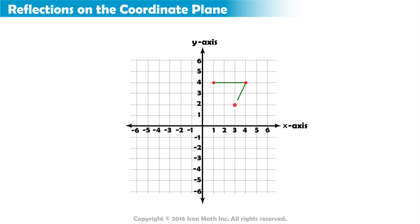Notice this triangle is created from the ordered pairs A(1,4), B(4,4), and C(3,2).